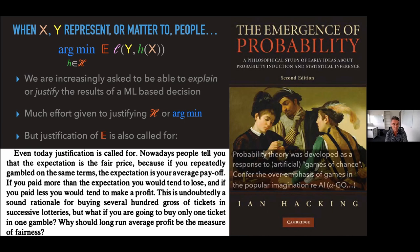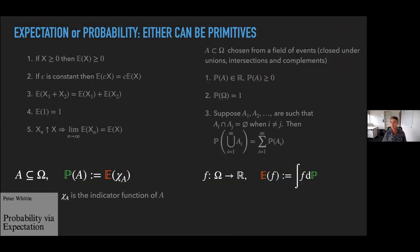This famous book by Ian Hacking on the emergence of probability says the same — even today, justification is called for. The point is: you should not take for granted that expectation is the way you should turn that big sequence of numbers into a single number.